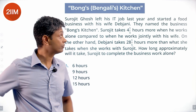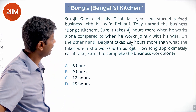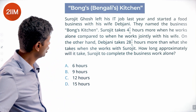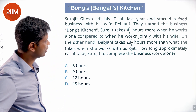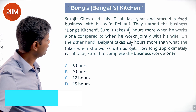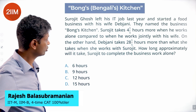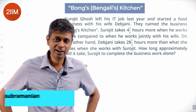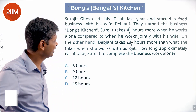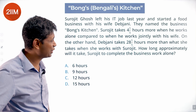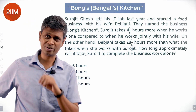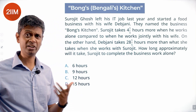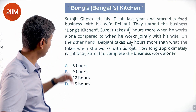Surajit Bose left his IT job last year and started a food business with his wife Debjani. They named the business Bong's Kitchen — weirdly a regionalist question; you might be offended with this kind of naming.